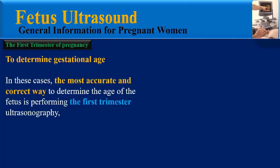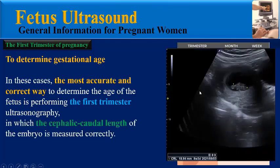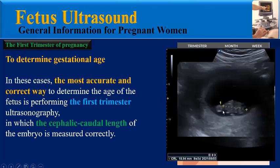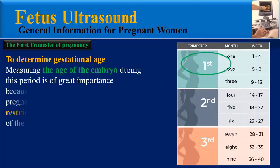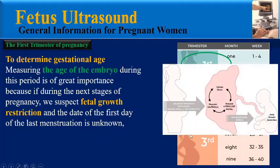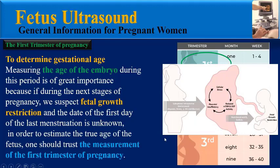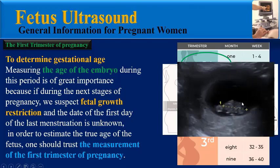If a pregnant woman does not have the date of the first day of the last menstruation, the most accurate and correct way to determine the age of the fetus is performing first trimester ultrasonography, in which the crown-rump length of the embryo is measured — that is, the length between the head and the tail of the embryo. This measurement is of great importance because if during the next stages of pregnancy we suspect fetal growth restriction, one should rely on the first trimester measurement to estimate the true age of the fetus.